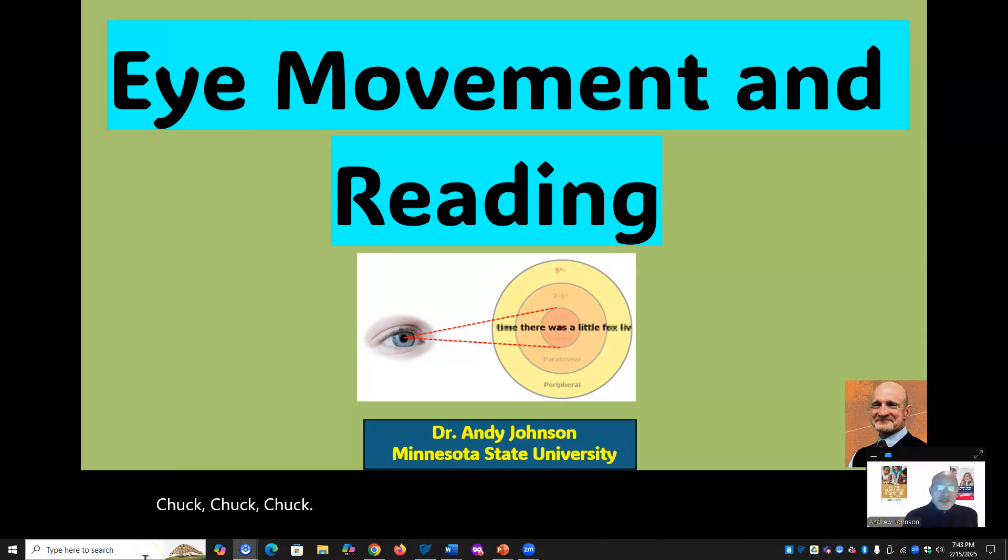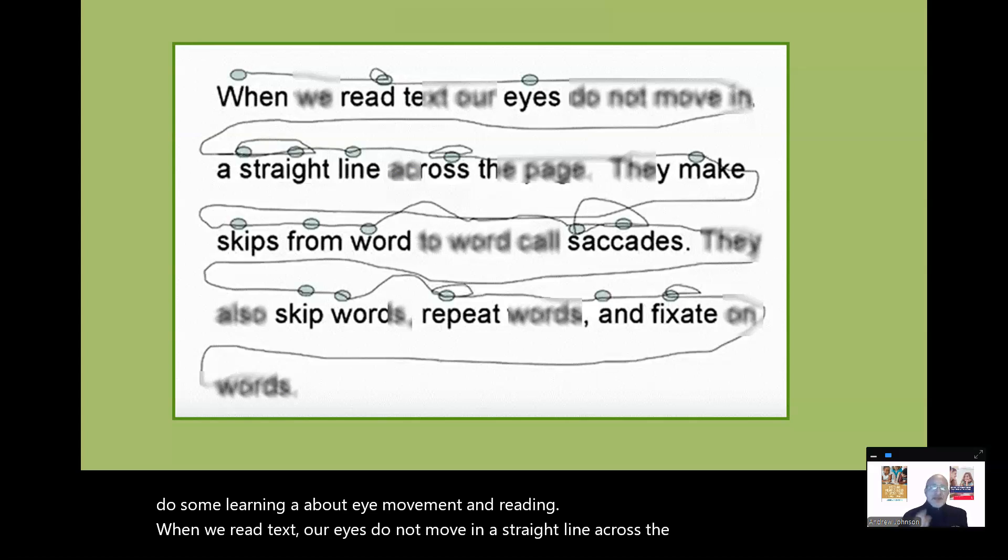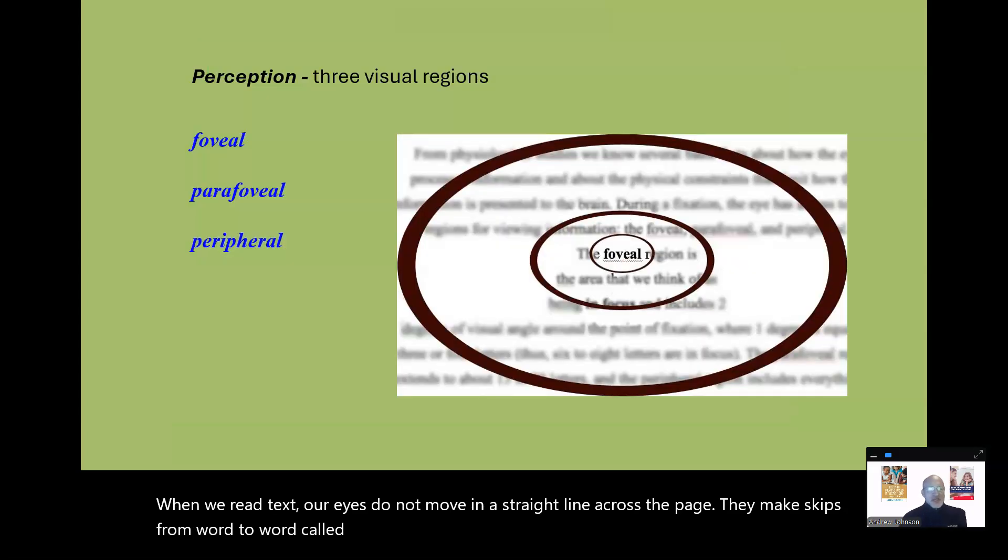Greetings, this is the Reading Instruction Show. I'm Dr. Andy Johnson. Let's see if we can do some learning about eye movement and reading. When we read text, our eyes do not move in a straight line across the page. They make skips from word to word called saccades. It only seems like that. Let me explain.